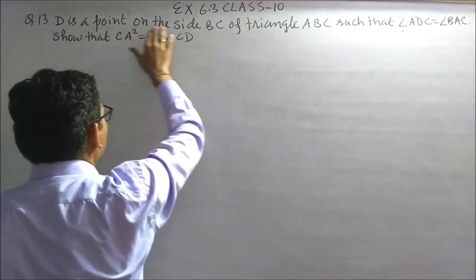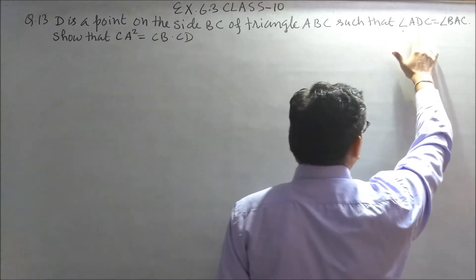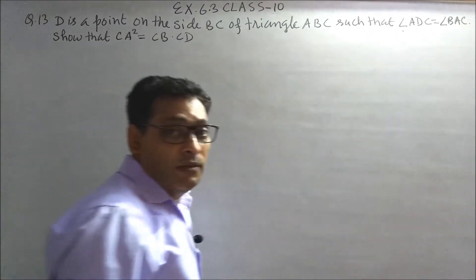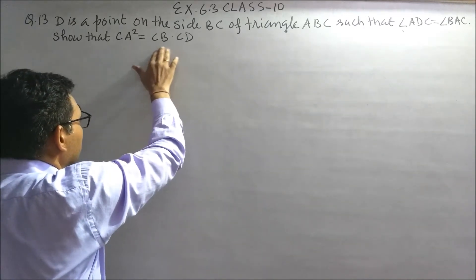The question says: D is a point on the side BC of triangle ABC such that angle ADC is equals to angle BAC. Show that CA square is equals to CB into CD.